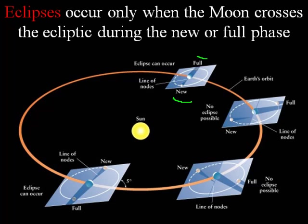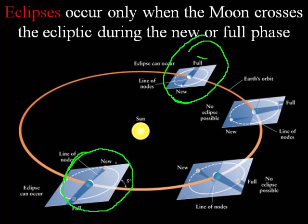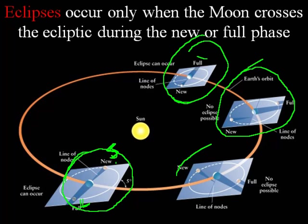Quite simply, an eclipse is a shadow — a shadow of the moon or a shadow of the Earth. At two particular times noted on the diagram, one at the bottom and one at the top, the moon's shadow would touch the Earth. We would have a solar eclipse at one point and a lunar eclipse at the other — that's where the moon goes into the Earth's shadow.